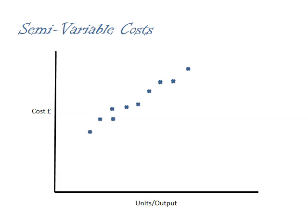With the high-low method, we take the same set of data, but this time what we do is we ignore everything other than the highest and lowest levels of output. And then, once we've done that, we assume that our semi-variable cost will go straight through both our highest and lowest levels of output. So let's have a look at how this works in practice.